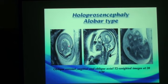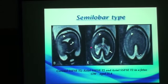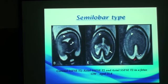In holoprosencephaly alobar type, there is only one large monoventricle with fused thalami. MRI also helps in detecting facial abnormalities such as hypotelorism. In the semilobar type, there is partial cleavage of the two lobes, with an edge-shaped configuration of the lateral ventricles, well-formed occipital lobes, slightly formed temporal lobes, and rudimentary falx.